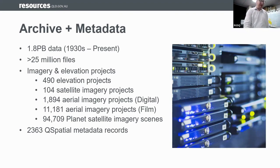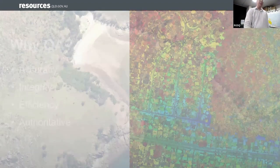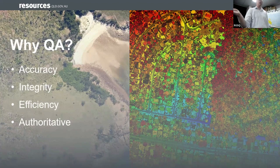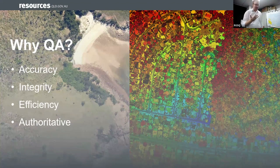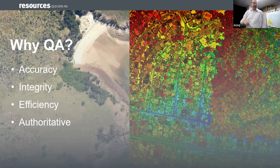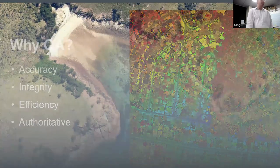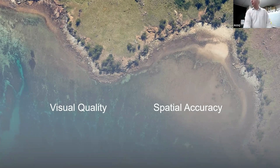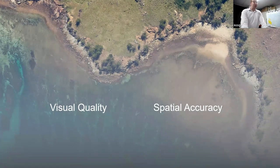We want to ensure really high quality in our data sets, so we can be sure that our suppliers are delivering what we asked for and taxpayer dollars are being spent appropriately. That's why we do quality assurance, or QA. We look against four main characteristics: accuracy, integrity, efficiency, and whether it is authoritative. For visual checks tonight, we're looking for errors across two main areas: visual quality and spatial accuracy.